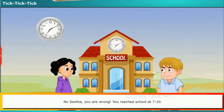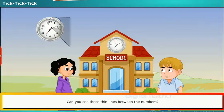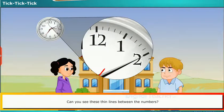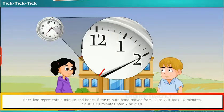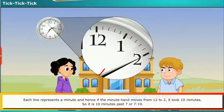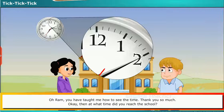No, Sita, you are wrong. You reached school at 7:10 in the morning. Can you see these thin lines between the numbers? There are 4 lines in between each of the numbers. Each line represents a minute, and hence if the minute hand moves from 12 to 2, it took 10 minutes. So it is 10 minutes past 7, or 7:10. Ram, you have taught me how to read the time. Thank you so much!